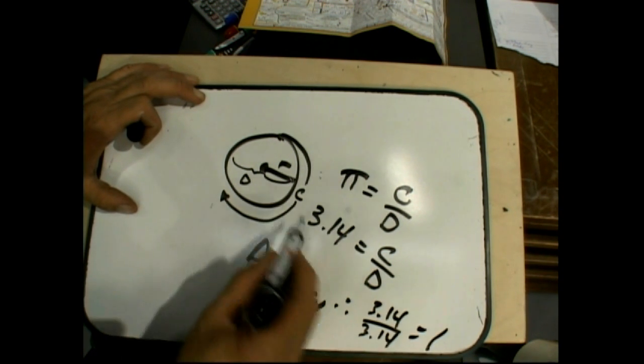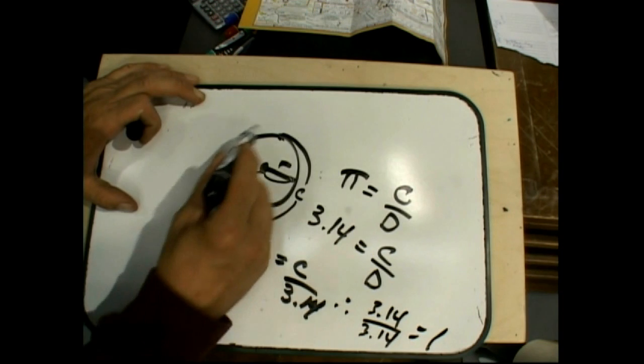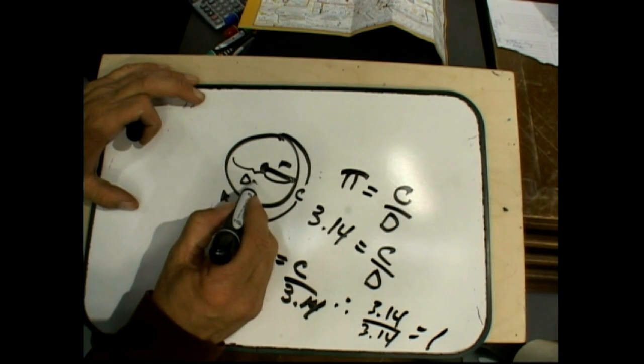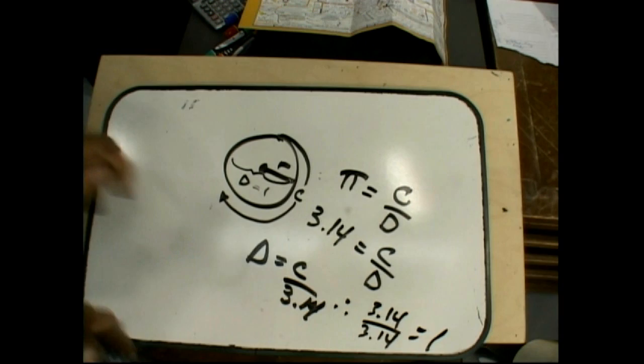such that 3.14 divided by 3.14 is going to equal 1, right? So for the C here to equal 3.14, which is pi, the diameter equals 1.